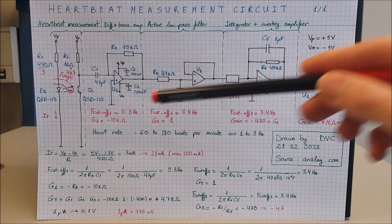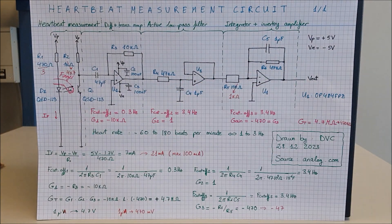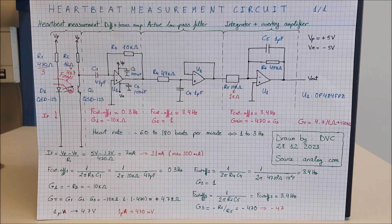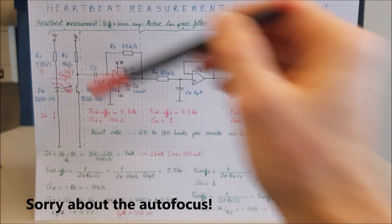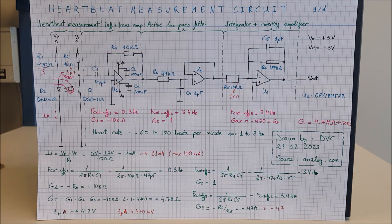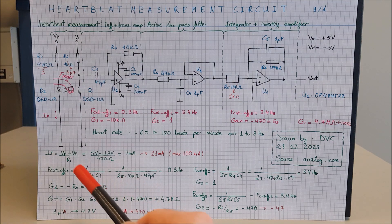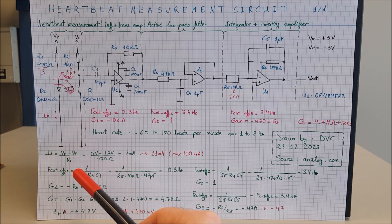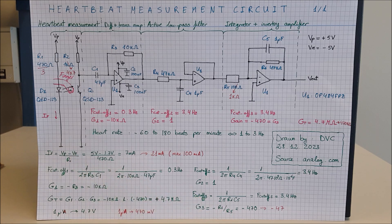We begin by limiting the current flowing through an infrared LED. Here we have plus 5 volts and resistor R1 is limiting the current so we don't destroy our LED. The forward current is given by this equation where we have 5 volts, the forward voltage of the LED, and the resistor.